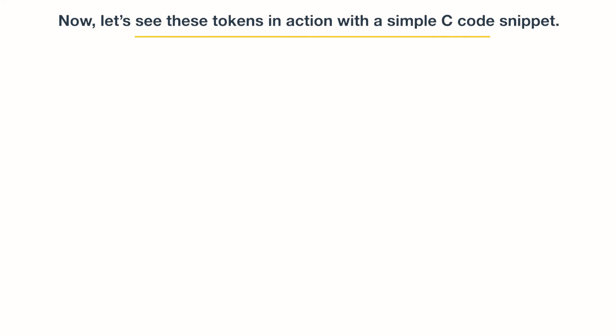Now, let's see these tokens in action with a simple C code snippet. Here's a basic C code with various tokens highlighted.